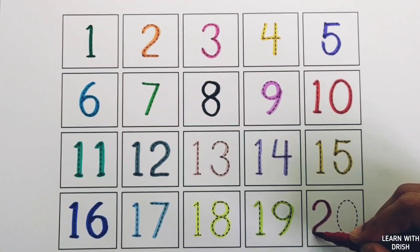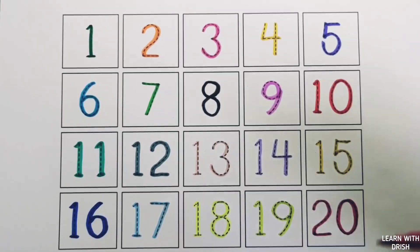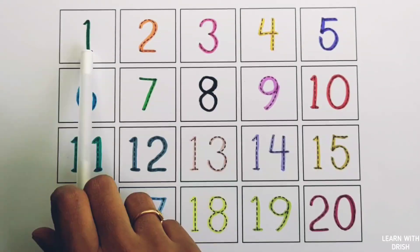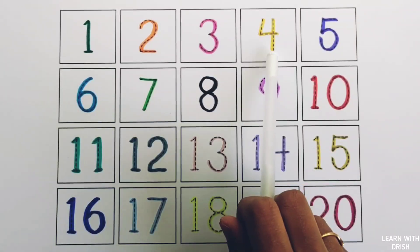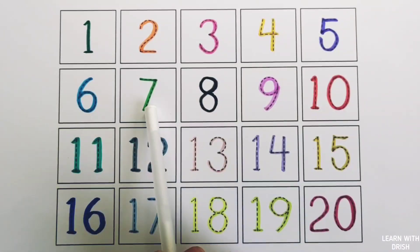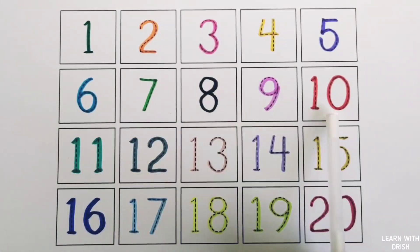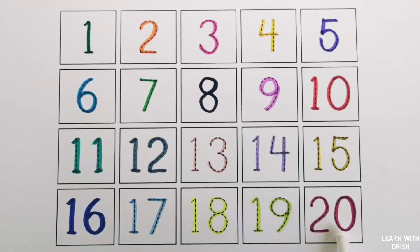Number 20. Number 1, 2, 3, 4, 5, 6, 7, 8, 9, 10, 11, 12, 13, 14, 15, 16, 17, 18, 19, and 20.